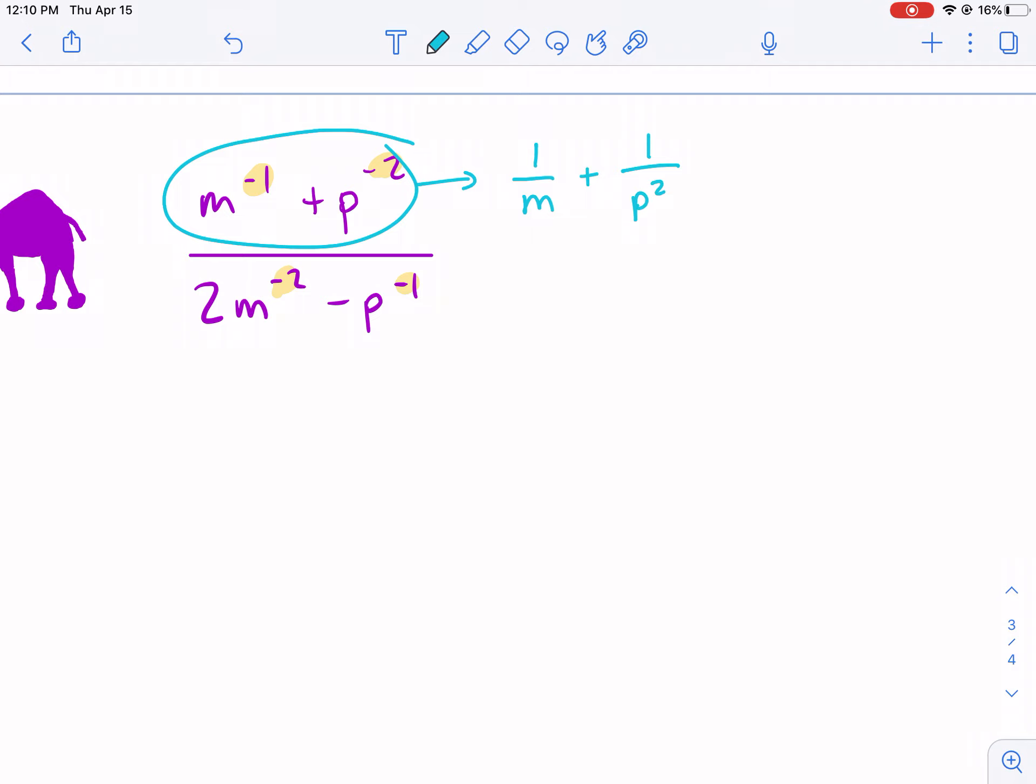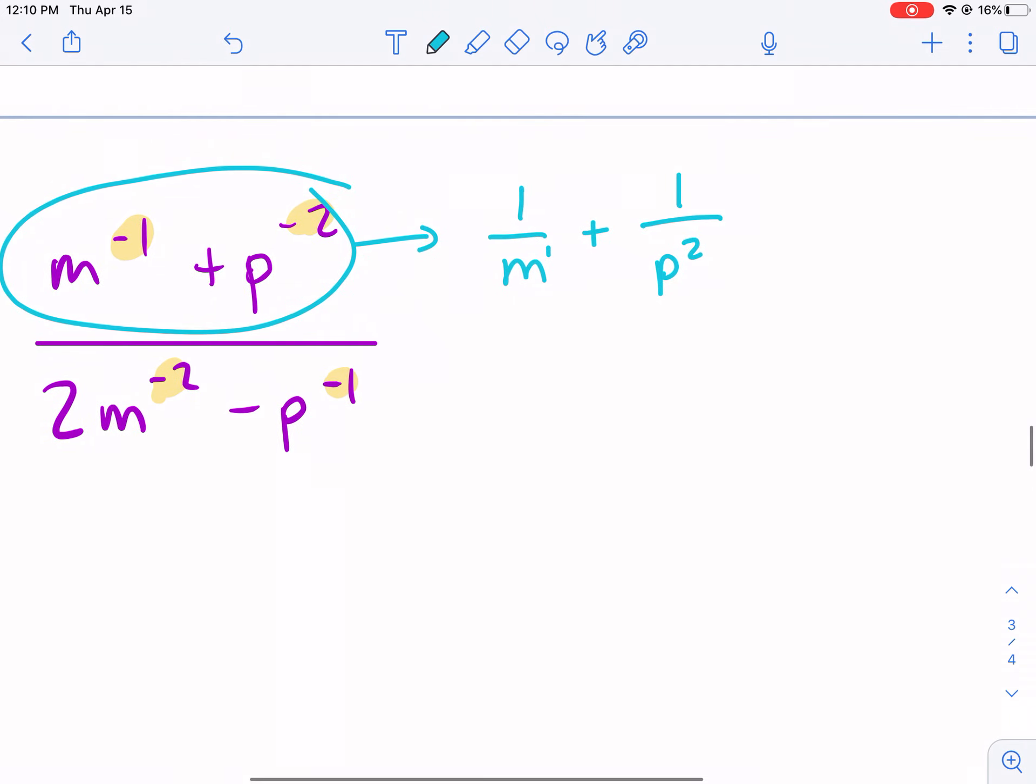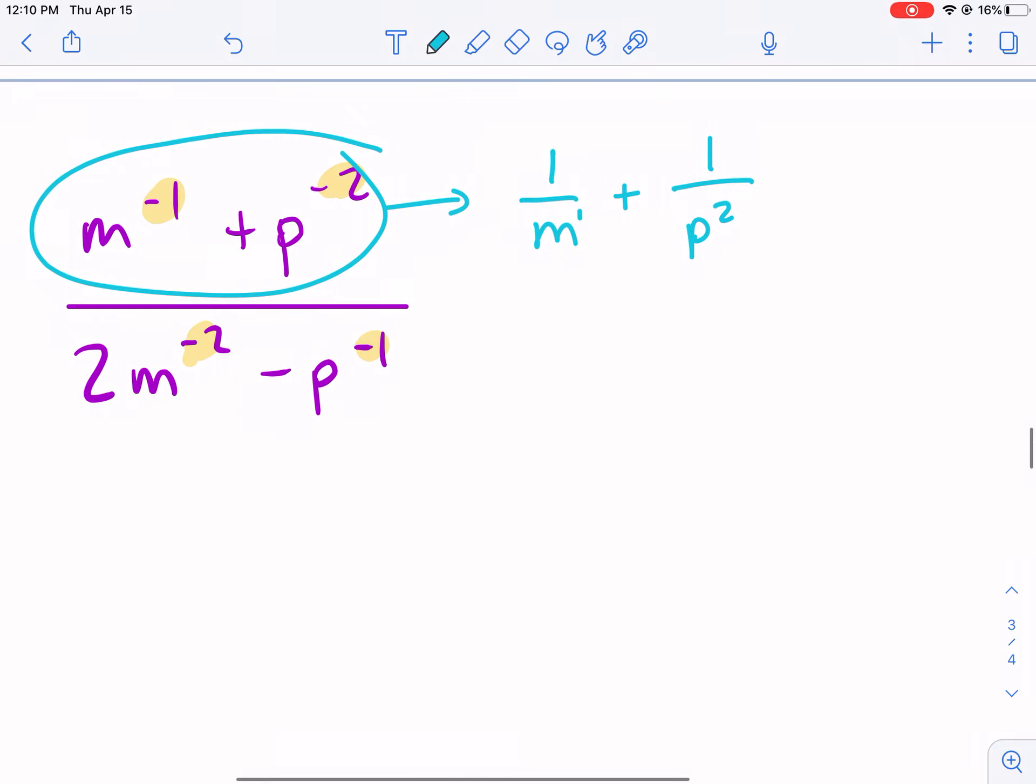So technically, anytime you have a negative exponent, to make it positive, you just put it in the denominator of a fraction. And then same thing with p to the negative 2, you just put 1 over p squared. So that's our first step.